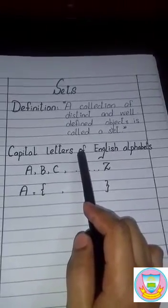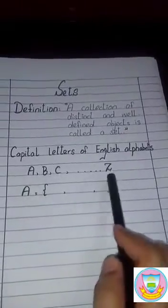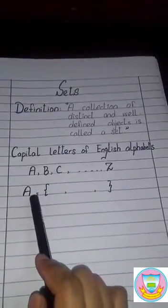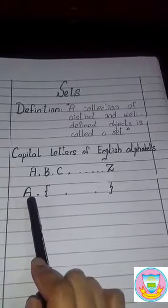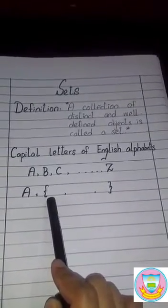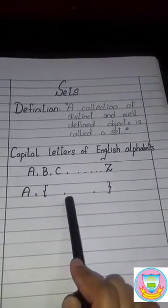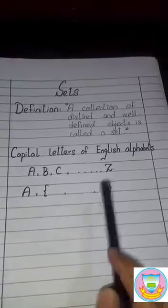A set is represented by using capital letters of English alphabet like A to Z. In a set, we first use a capital letter at the start, then equal sign and then a bracket. In the bracket, we separate each element by using a comma.